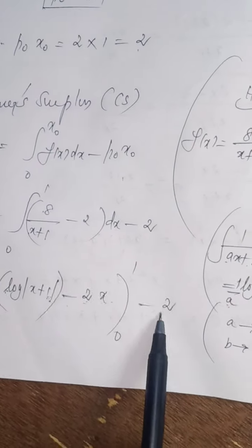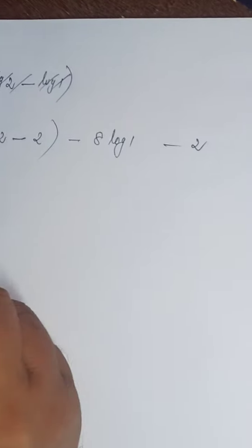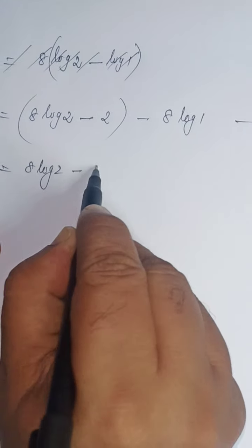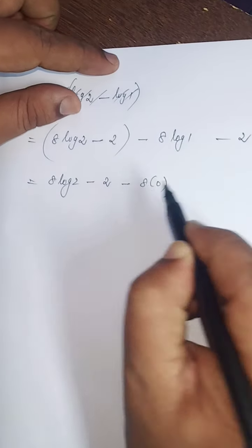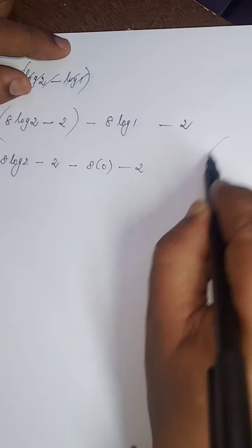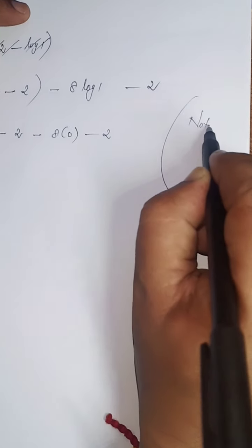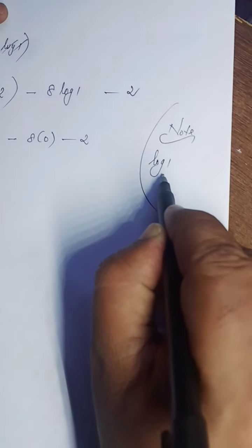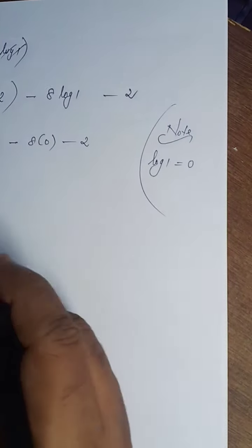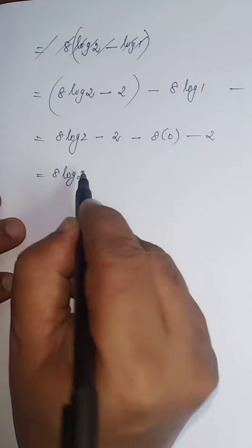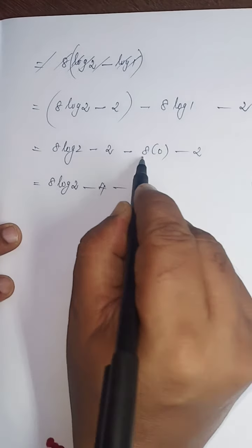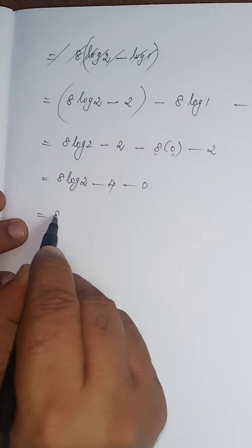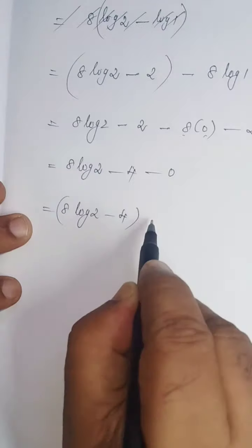Finally: CS equals 8 log 2 minus 2 minus 8 times 0 minus 2. Remember, log 1 to any base equals 0. So CS equals 8 log 2 minus 2 minus 0 plus 2, which simplifies to 8 log 2 minus 4 units.